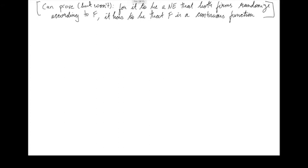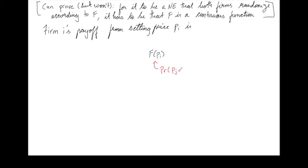Now, if both firms randomize according to CDF f, firm i's payoff from setting price pi is: with probability f(pi), my opponent sets a price lower than mine, so I get demand of 2 times pi; with probability 1 minus f(pi), my opponent sets a higher price, so I get demand of 8 times pi. So the expected payoff is 8*pi*(1 - f(pi)) plus 2*pi*f(pi).